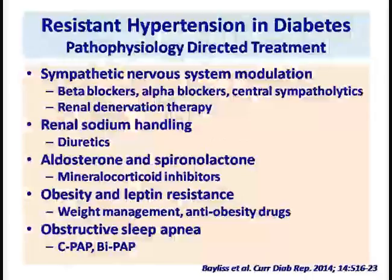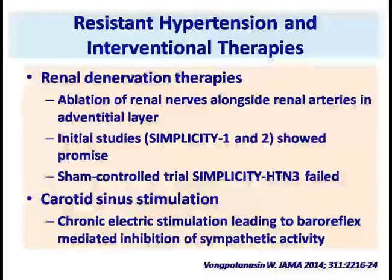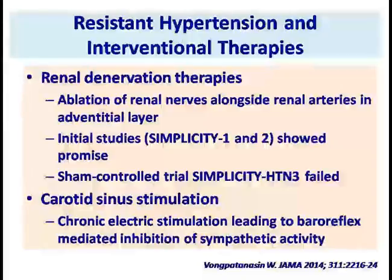Finally, there is a role for interventional therapies, of two types being tested in resistant hypertension. The first is renal denervation therapy, which involves ablation of renal nerves along the renal arteries in the adventitial layers. Initial trials — Symplicity 1 and Symplicity 2 — showed promise, with a large decline in both systolic and diastolic blood pressure over one year, though these studies were not randomized. However, in the randomized trial — Symplicity 3 — it failed.